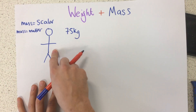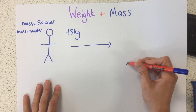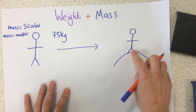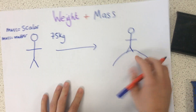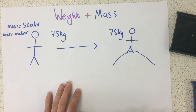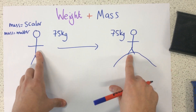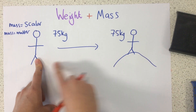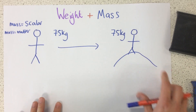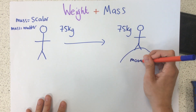Let's imagine that we took this person and they went to the moon. This is now this person on the moon. Their mass would still be exactly the same — 75 kilograms — because the amount of atoms in their body, the matter in their body, has not changed. They're still the same, just in a different place in the universe. That's why I use this example of being on the moon.